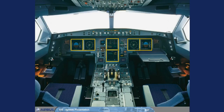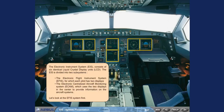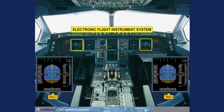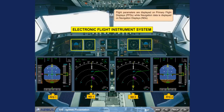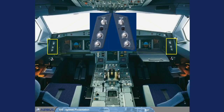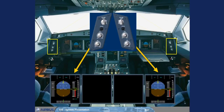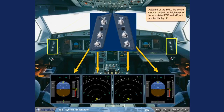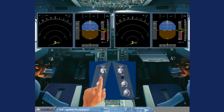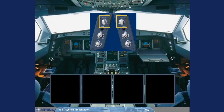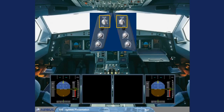Let's look at the EFIS system first. Flight parameters are displayed on Primary Flight Displays, PFDs, while navigation data is displayed on Navigation Displays, NDs. Outboard of the PFD are control knobs to adjust the brightness of the associated PFD and ND, or to turn the display off. A switch is provided to allow the information on the PFD and ND displays to be transferred. At the top of this panel, a switch allows the pilot to manually select the data source for his PFD and ND.